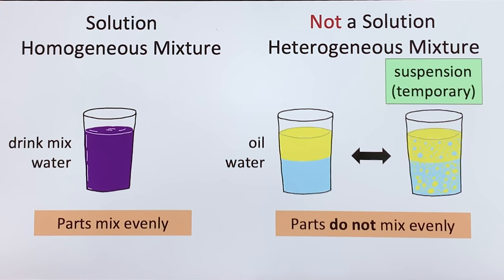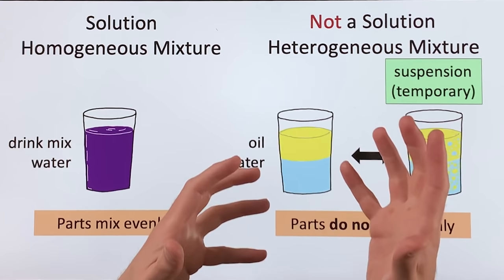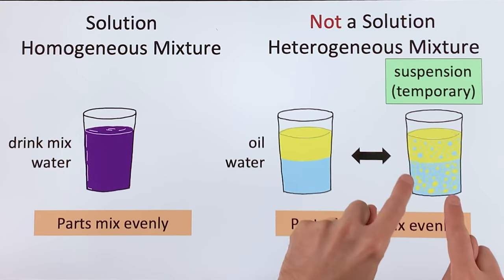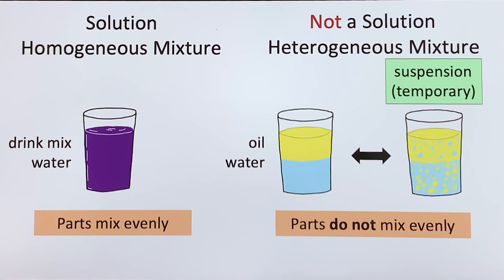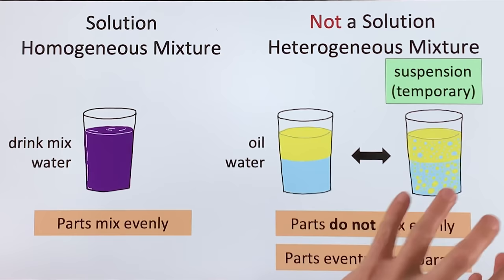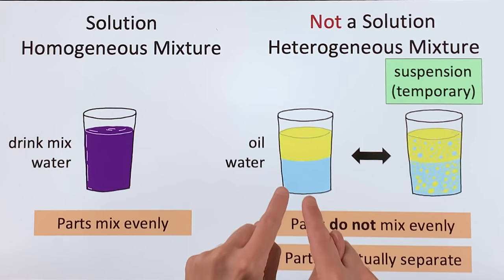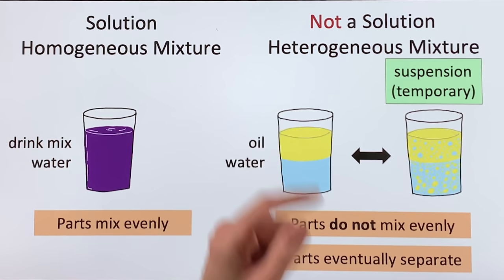Now, if you have a heterogeneous mixture like this, you can stir it up, or you can shake it up, and you can temporarily form what's called a suspension, which looks like this. Everything is kind of all mixed up in there together. But that's only temporary. Eventually, everything is going to settle back out. Now, it's going to separate back out, and you're going to end up like this again. So the parts eventually separate out when you have a heterogeneous mixture.